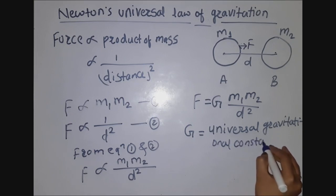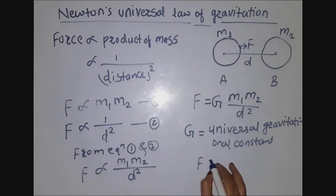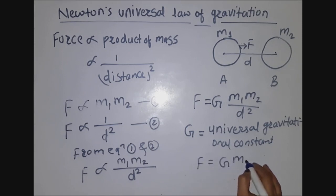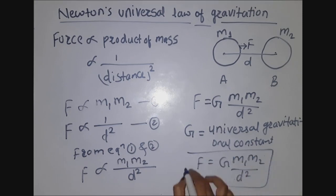So the final equation of Newton's universal law of gravitation is F is equal to G into M1 into M2 divided by D squared. This is Newton's universal law of gravitation.